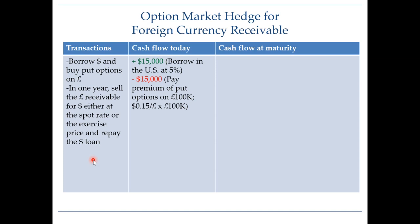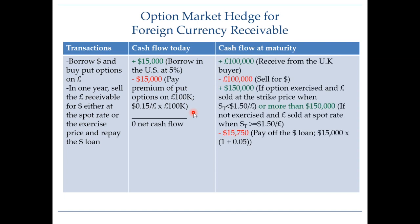Cash flow today would look like this: you will borrow fifteen thousand dollars today, which is the amount you need to buy put options on one hundred thousand pounds. You borrow fifteen thousand dollars in the U.S. at the U.S. interest rate of five percent, then use those fifteen thousand dollars to buy put options on one hundred thousand pounds. The net cash flow today is zero.